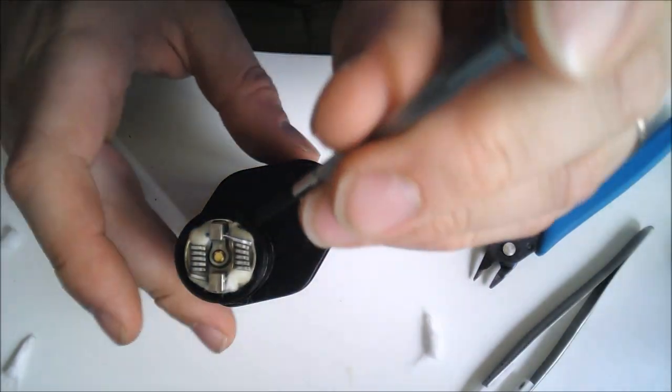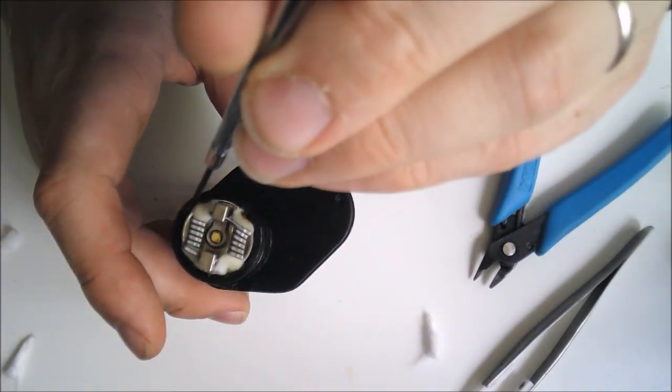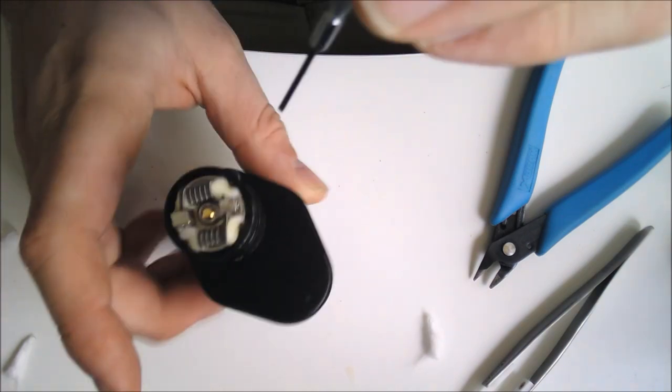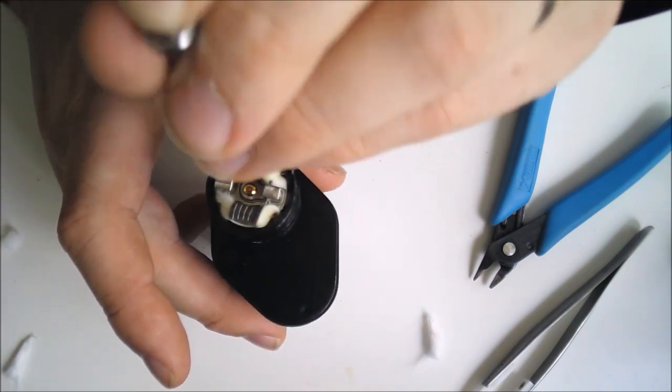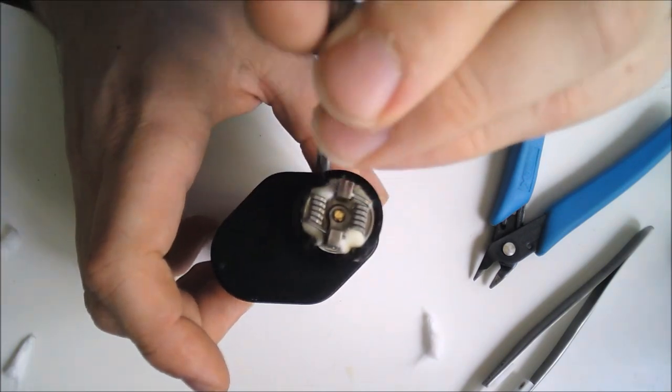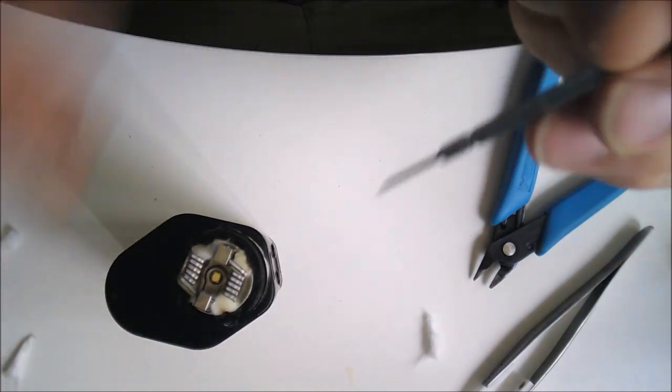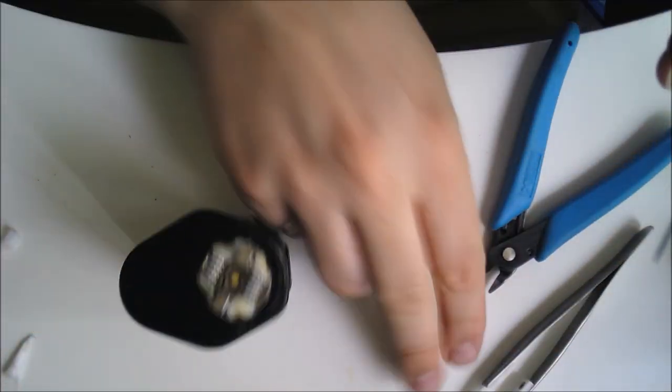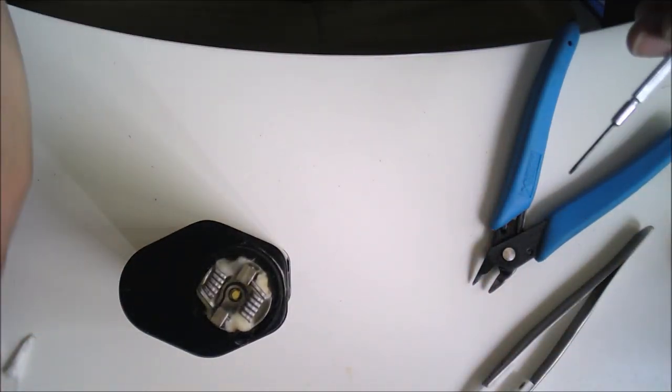And then take that smaller screwdriver just down these wick holes, so that you allow the pressure and the juice to wick up quickly.